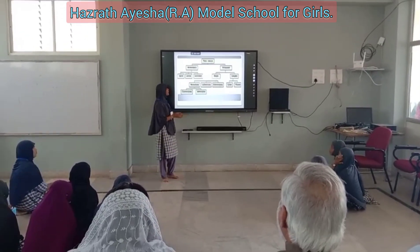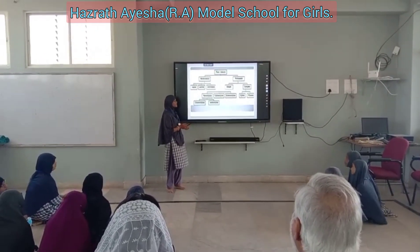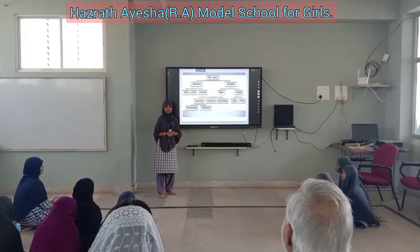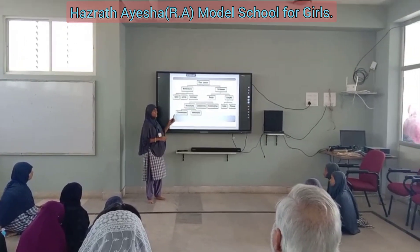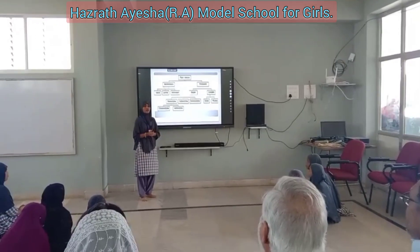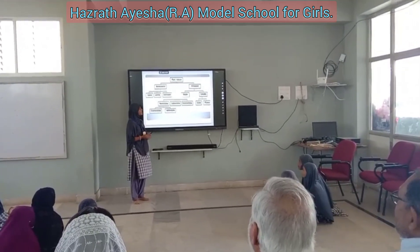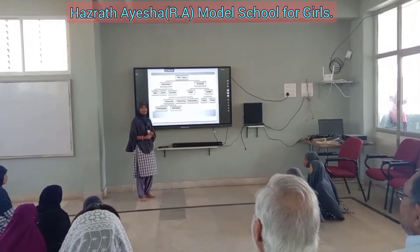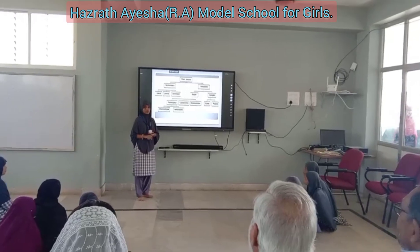Permanent tissues are of three types. Meristematic plant tissues are also of three types: apical, lateral, and intercalary. Permanent tissues are further classified into simple permanent tissues and complex permanent tissues.